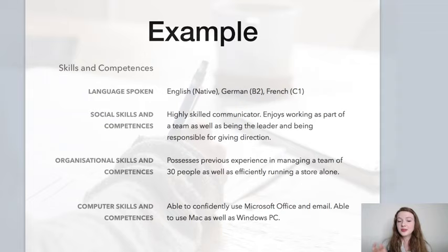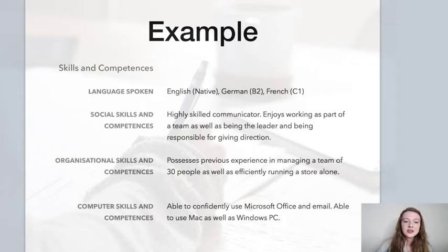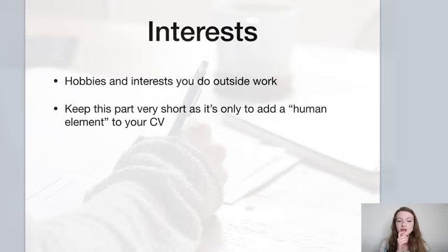Organisational skills and competencies — these are subsections within the skills and competencies part. You can include your own subsections depending on the kind of skills and the job you're applying for. John has included computer skills, Microsoft Office, and so on. You can customise these subsections to match your own qualifications and the specific role.